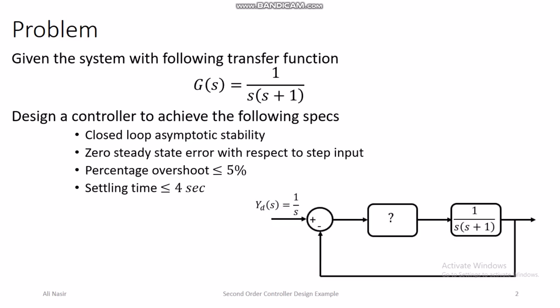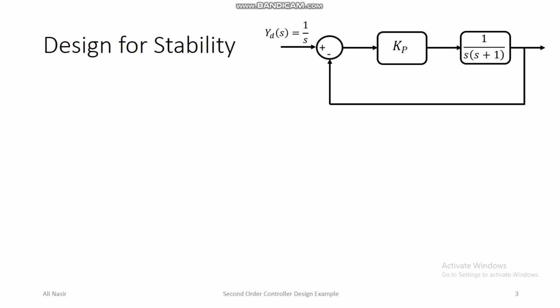The specifications are: number one, the closed loop system should be asymptotically stable; number two, there should be zero steady state error with respect to step input; number three, percentage overshoot should be less than or equal to five percent; and finally, settling time should be less than four seconds. We need to determine what kind of controller achieves these desired specifications.